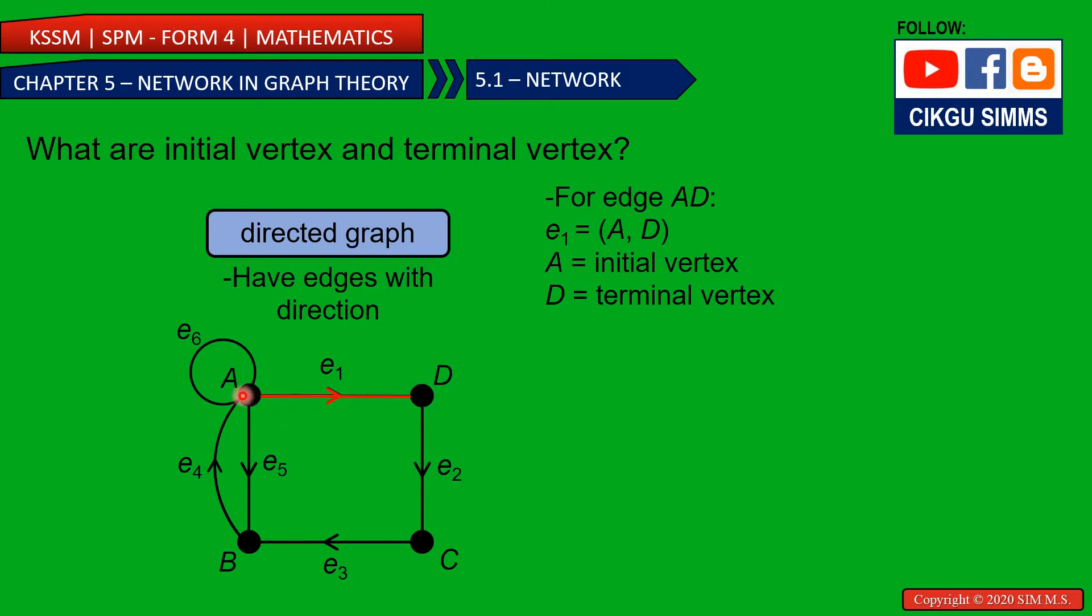So the E1 is called AD, from A going to D. So in this case, A is called the initial vertex because it's starting from A and then going to D. So D, you call it terminal vertex.